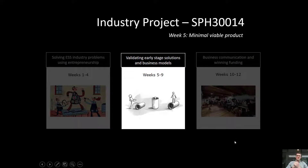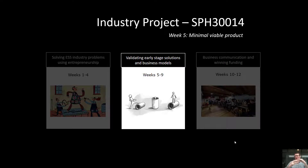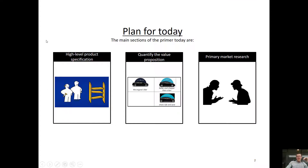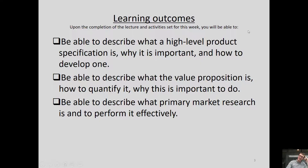Okay, hi everybody, welcome to industry project week 5 and welcome back from the break. I hope everyone did okay with their assessment tasks. This week we're going to be launching into the next phase of the course, focusing on validating your early stage solutions and business model. This topic is around the concept of what's called a minimal viable product. We'll talk about high level product specification, quantifying the value proposition, and how to conduct primary market research. These are the key learning outcomes for this week's primer and workshops.